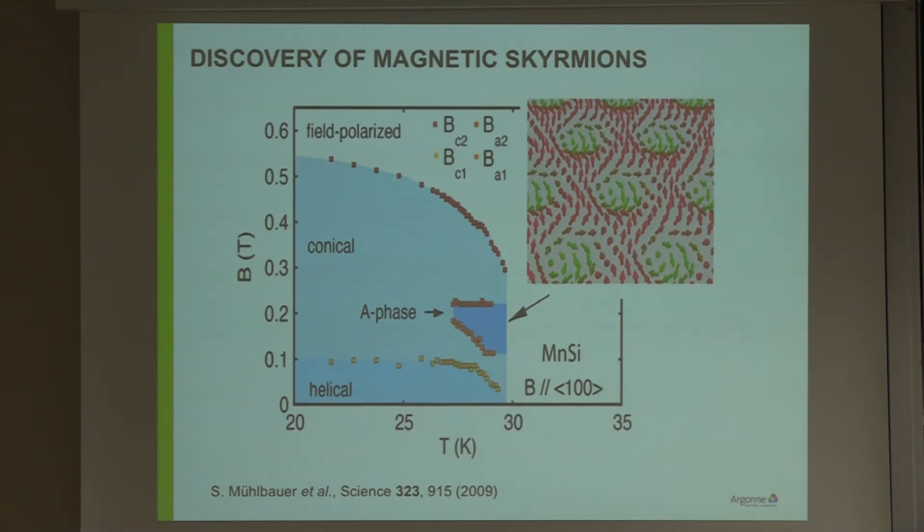They were able to correlate this structure to this arrangement of spins where a hexagonal lattice is formed in these swirling objects that we now call magnetic skyrmions. Later TEM measurements from groups in Japan confirmed with Lorentz TEM that these are indeed the spin structure.